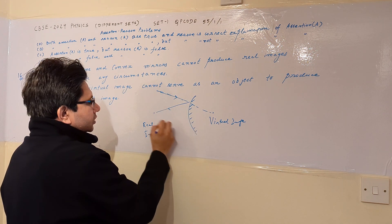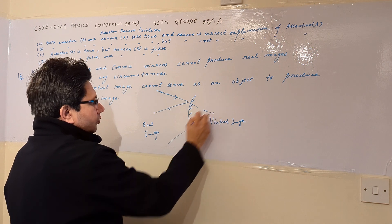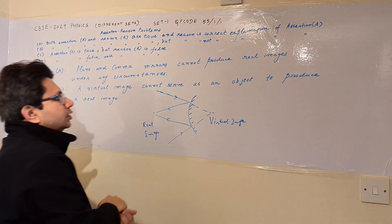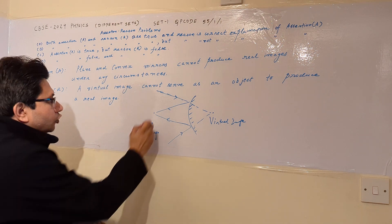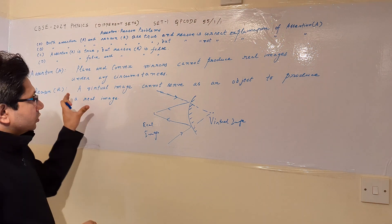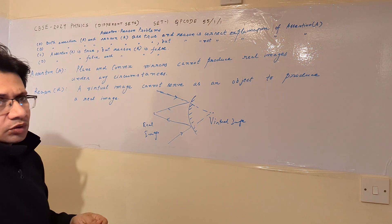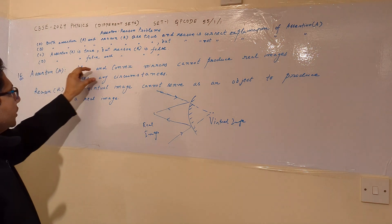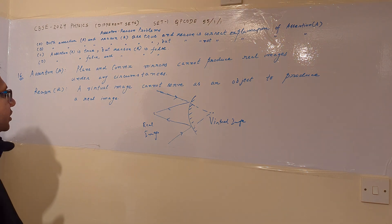This is the ray diagram which can easily elaborate the formation of the real image. So this is a wrong statement, and according to this particular wrong statement, we can now see the assertion — that plane and convex mirrors cannot produce real images under any circumstances.